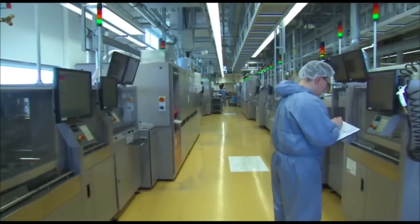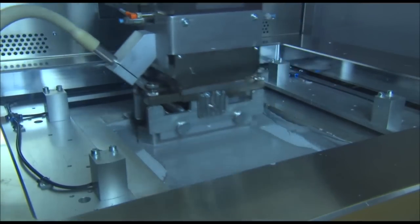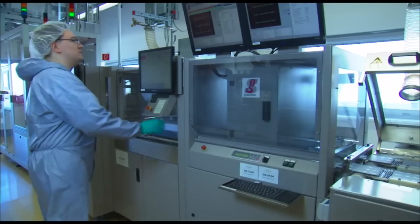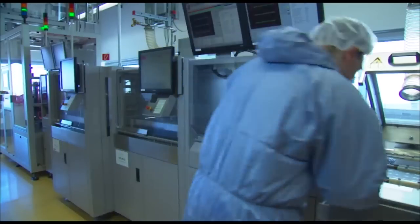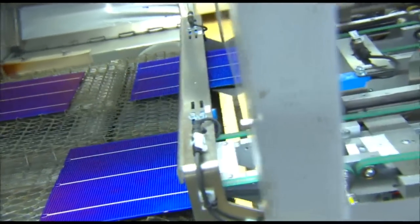However, to actually conduct electrical power from the cells, metal contacts are needed. Screen printing machines are used to apply a contact area with solder strips onto the back side and thin contact fingers onto the front side.